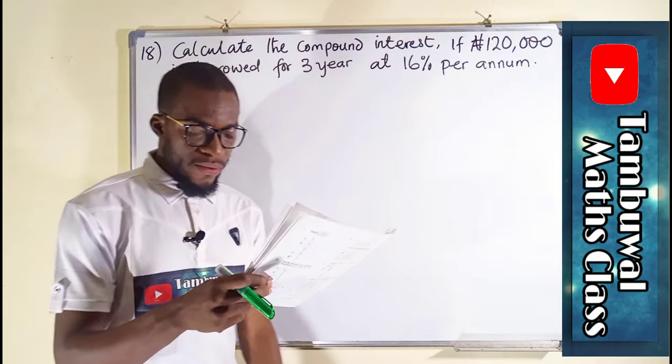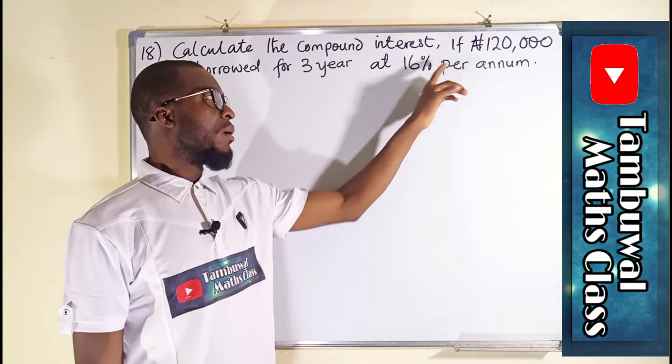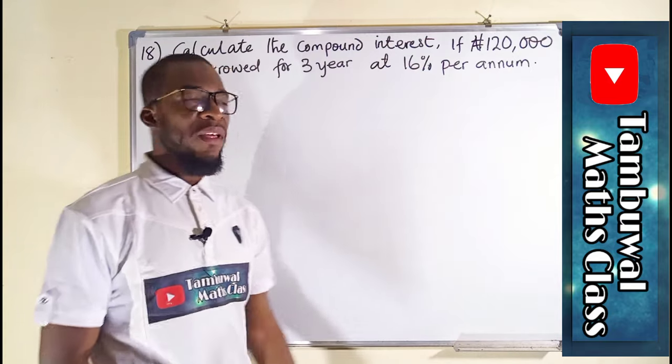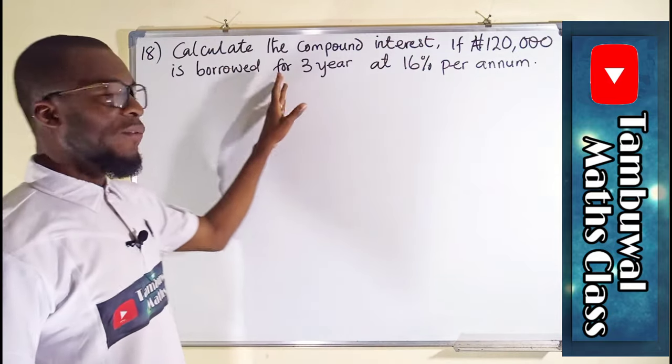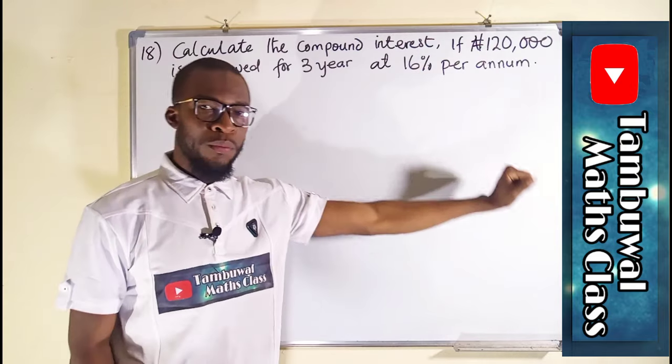Question number 18. It says we should calculate the compound interest if $120,000 is borrowed for three years at the rate of 16% per annum.